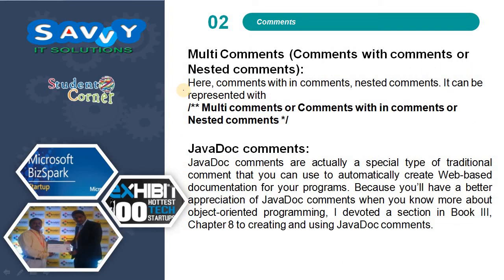Now, moving on to nested comments — comments within comments. Nested comments can be represented with /** and */. In between, you can also use additional comments. For example, you can write an outer comment block and include an inner comment within it. This inner comment is also considered part of the comment block; otherwise, it will not be considered.